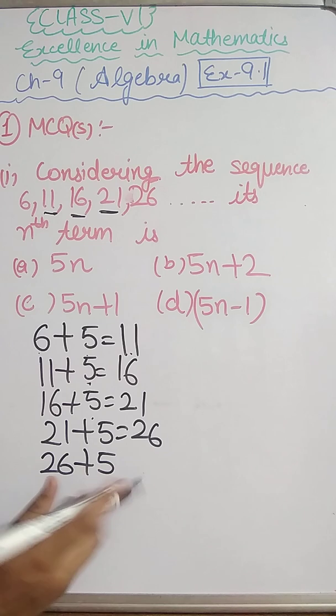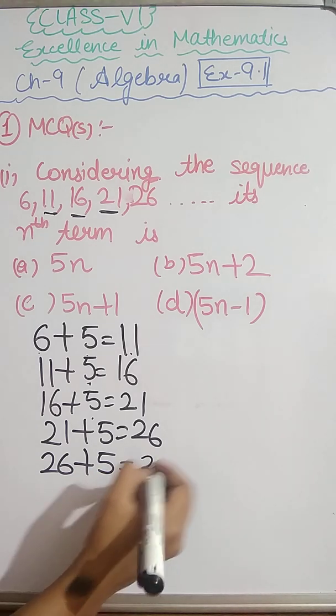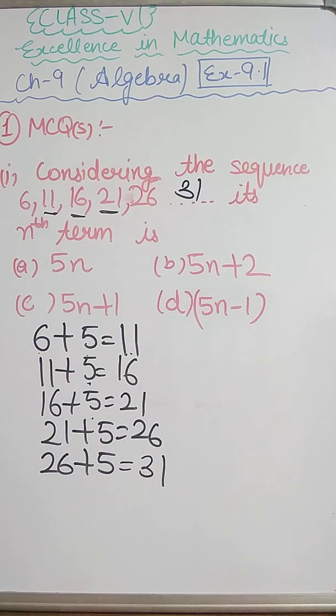If we add 5, our answer will be 31. So next sequence is 31. After 26, next number will be 31. And which term is used in this? We have options given.